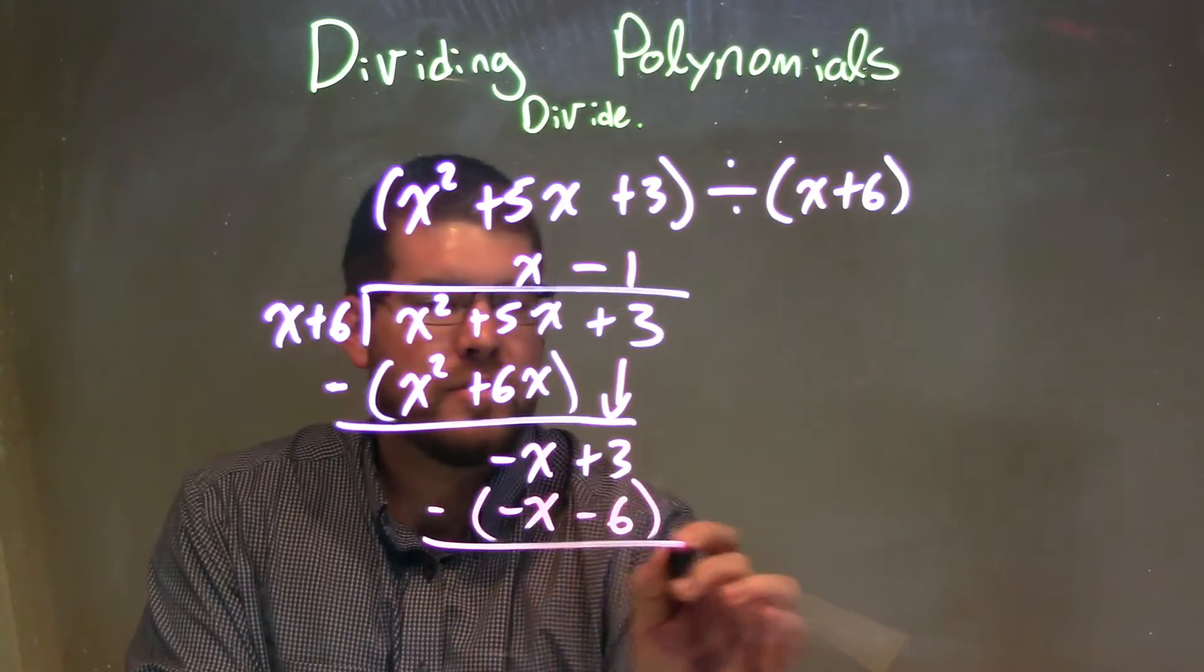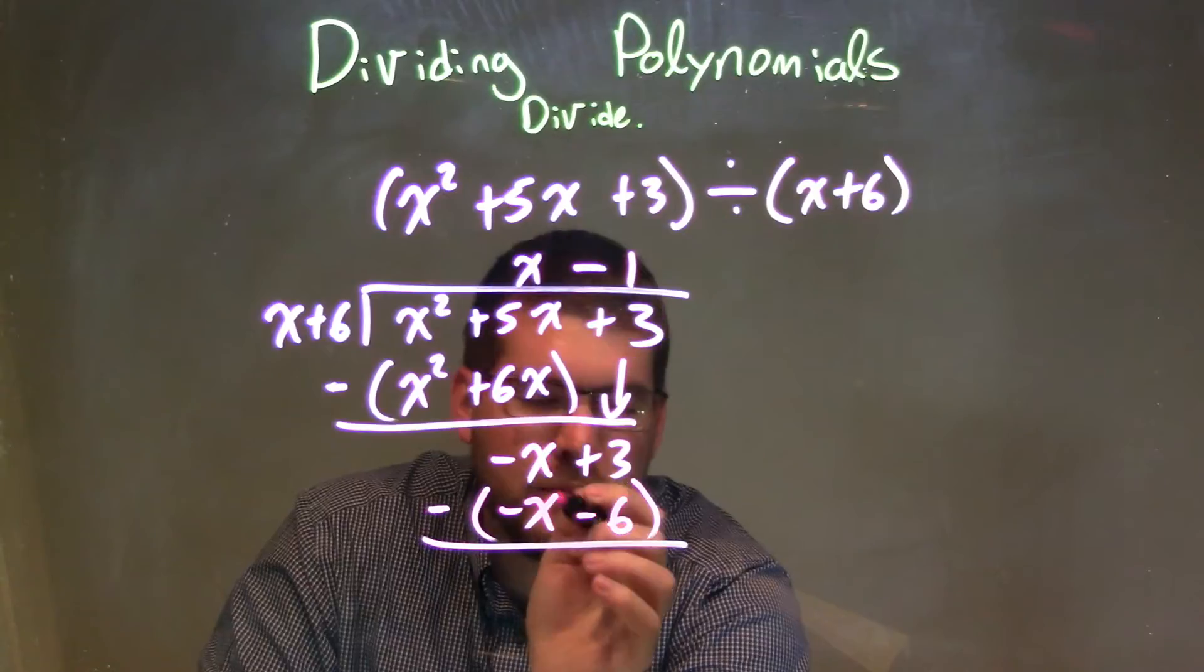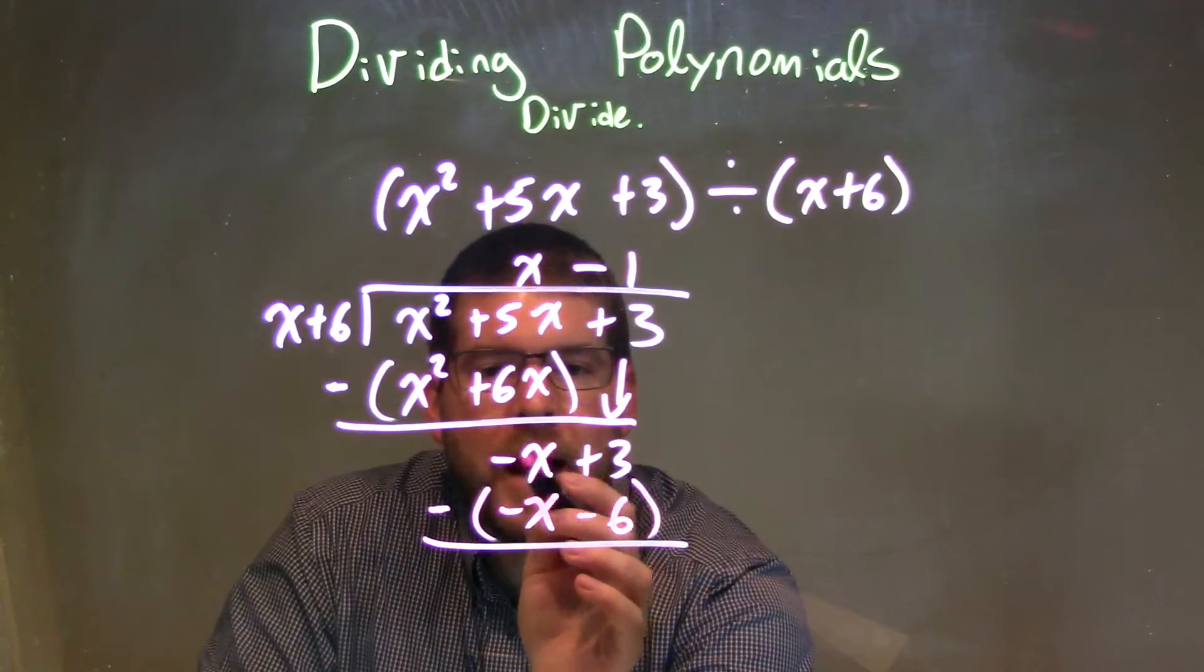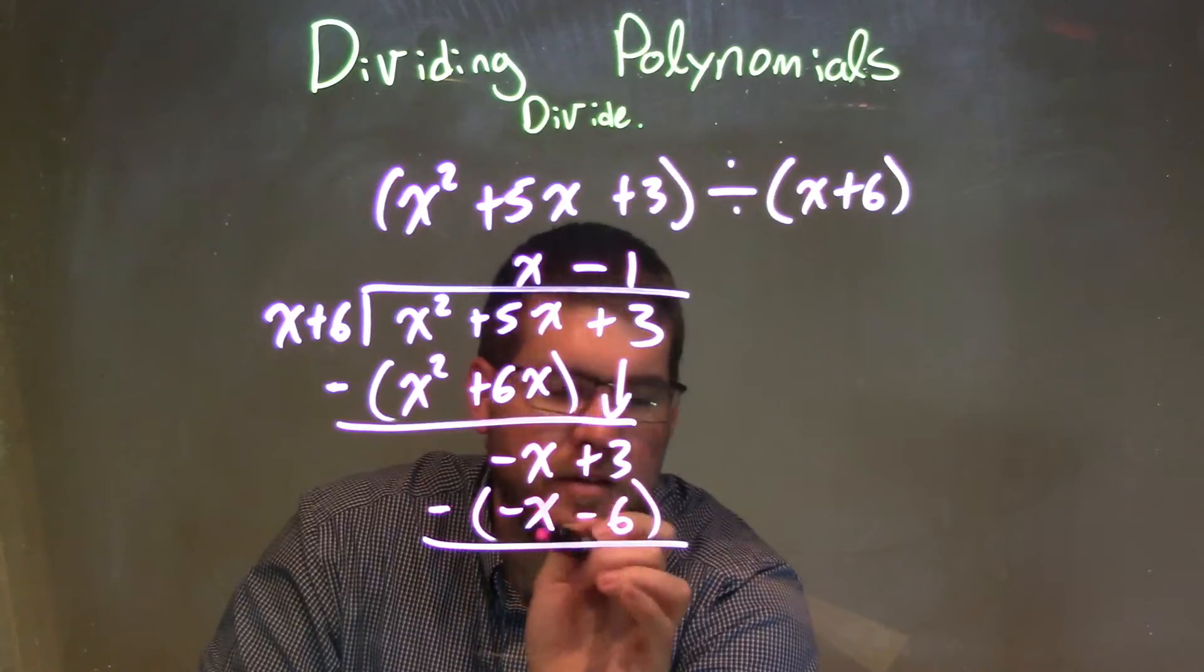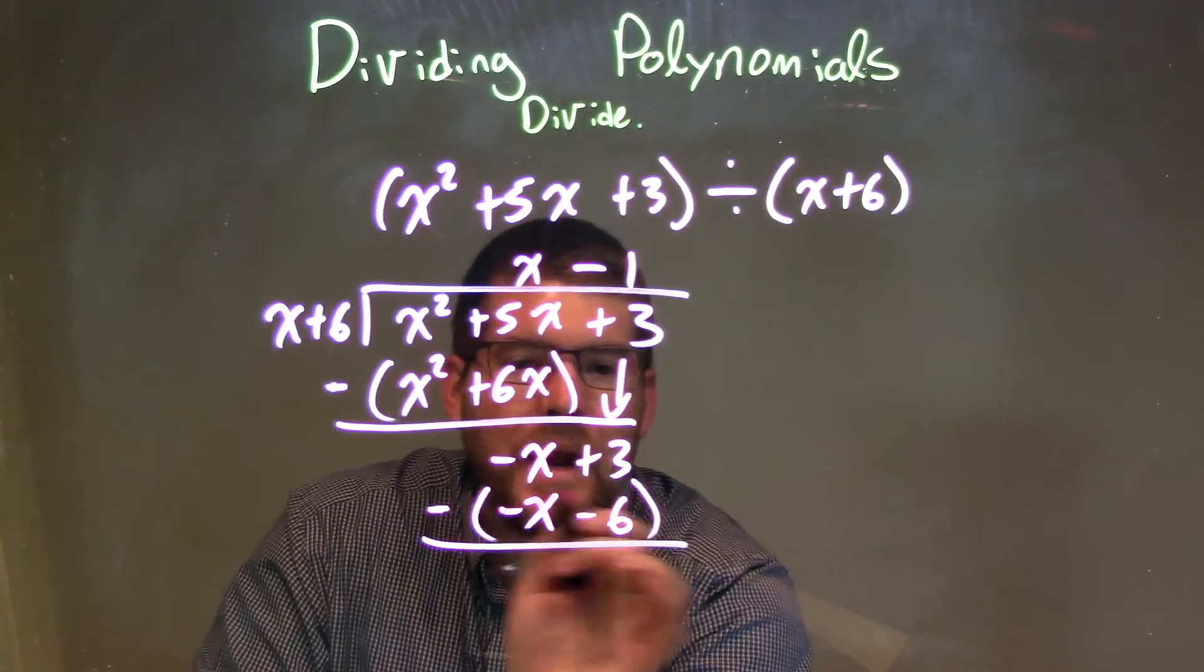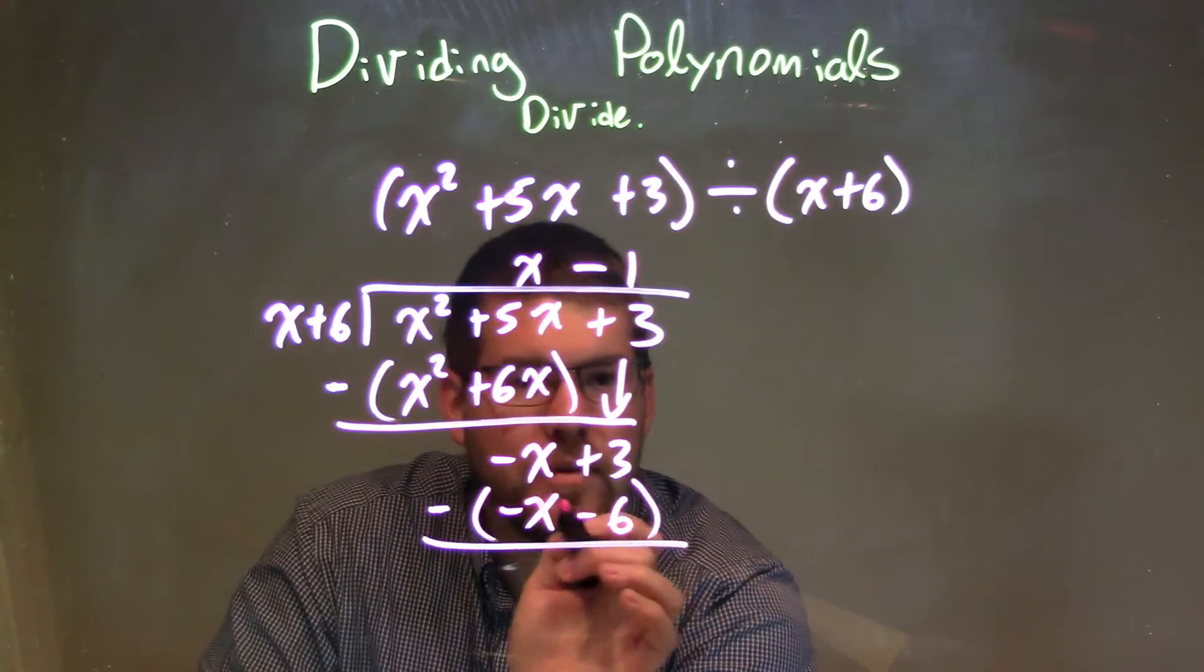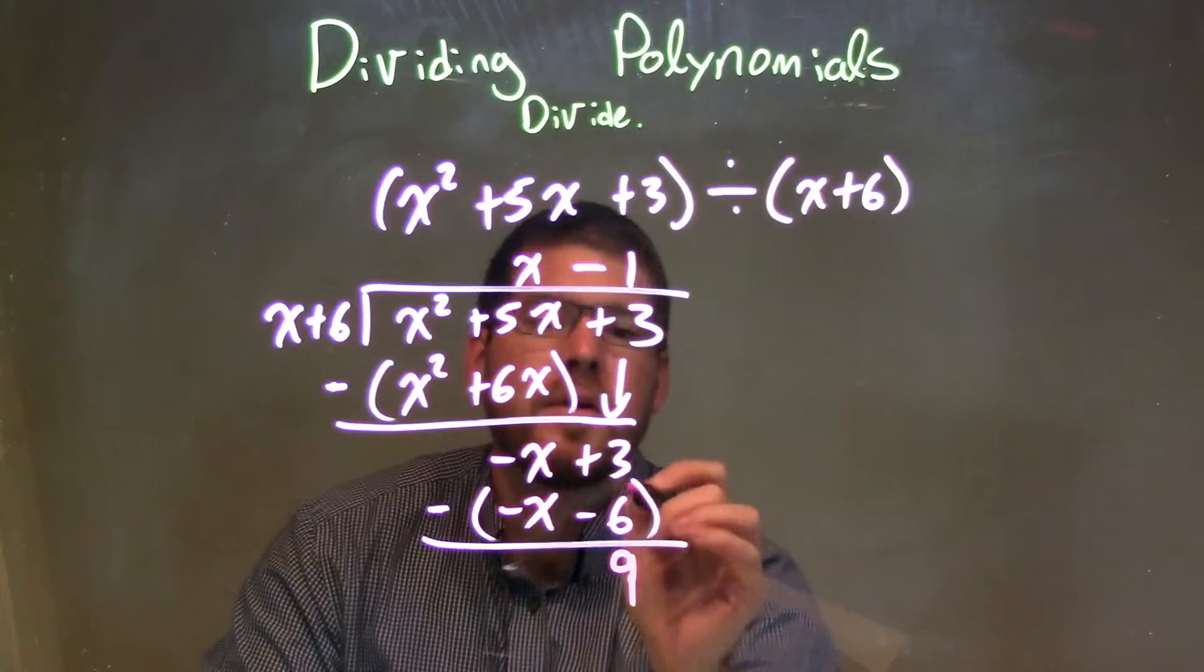But again, I'm subtracting this, so we make sure we distribute the subtraction sign and we simplify this. Minus x minus negative x is 0, right? Adding a positive x is 0. Good. Eliminates. And then 3 minus a negative 6, the same thing as adding a positive 6, and that's a positive 9. Okay. So we have a remainder of 9 right there.